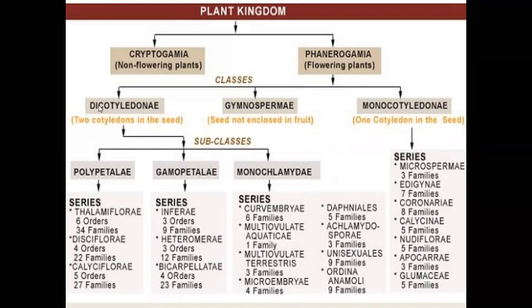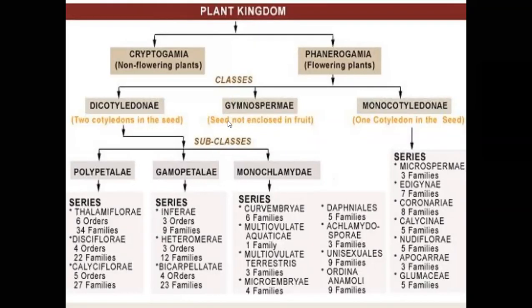The dicotyledone class has seeds containing two cotyledons, leaves with reticulate venation, pentamerous or tetramerous flowers, and a taproot system. In gymnosperms, seeds are not enclosed within a fruit — fruits are absent. In monocotyledone, the embryo contains a single cotyledon, leaves have parallel venation, flowers are trimerous, and an adventitious or fibrous root system is present.